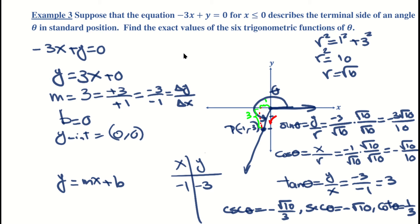None of the angles we've dealt with so far have been quadrantal angles. Quadrantal angles are those where the terminal side falls on one of the axes: the positive x-axis, negative x-axis, positive y-axis, or negative y-axis. Let's see what happens with quadrantal angles and their trigonometric functions, starting with the 90-degree angle.